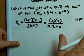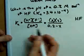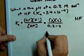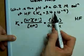But in any case, this is the key right here. This is equal to the Ka, which was 3.4 times 10 to the minus 4.